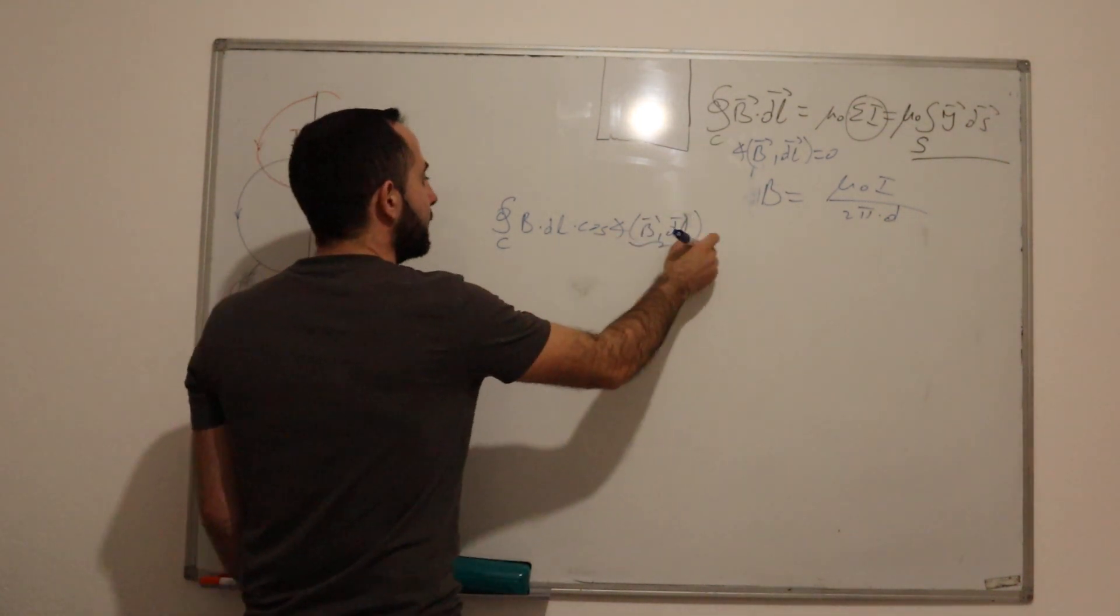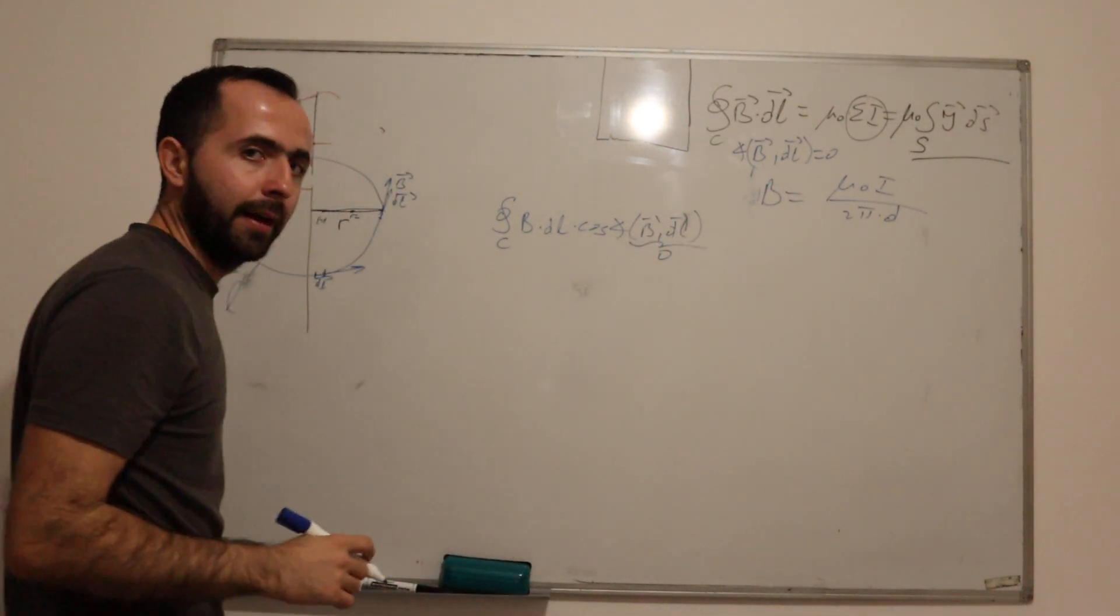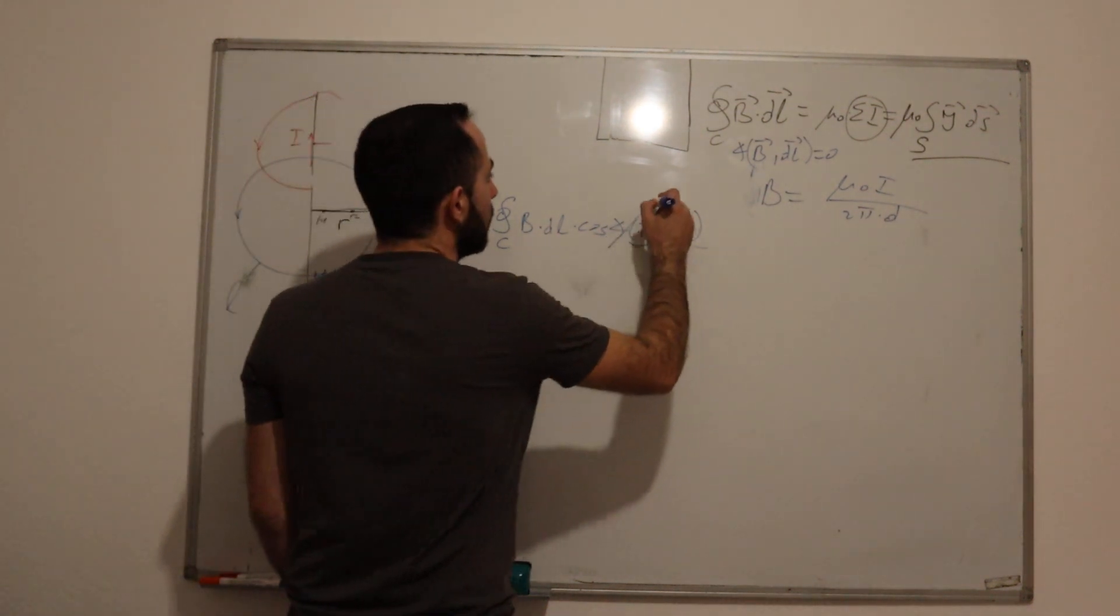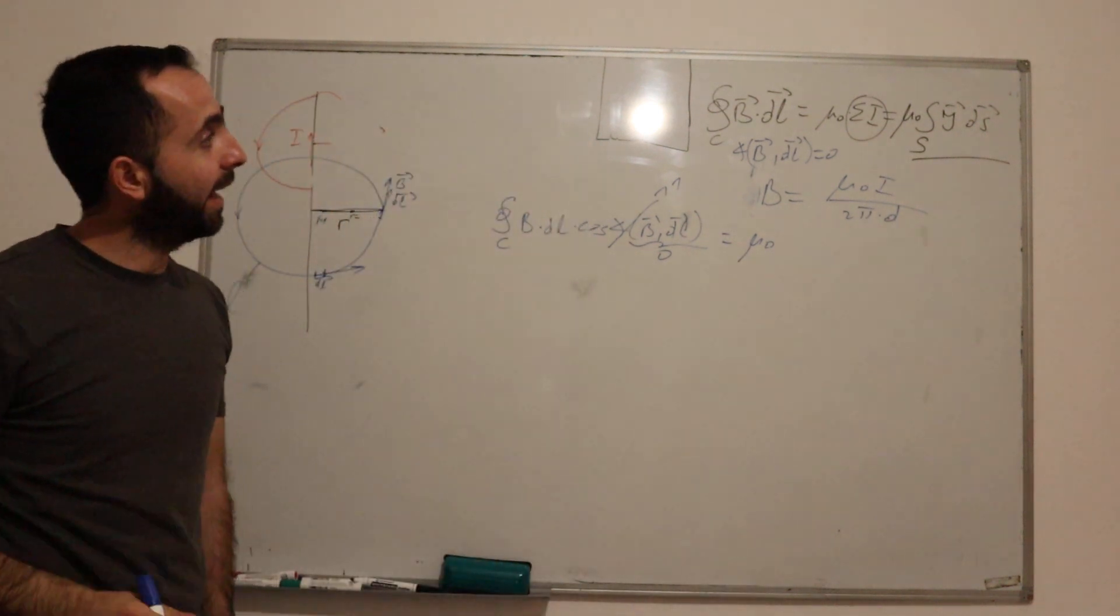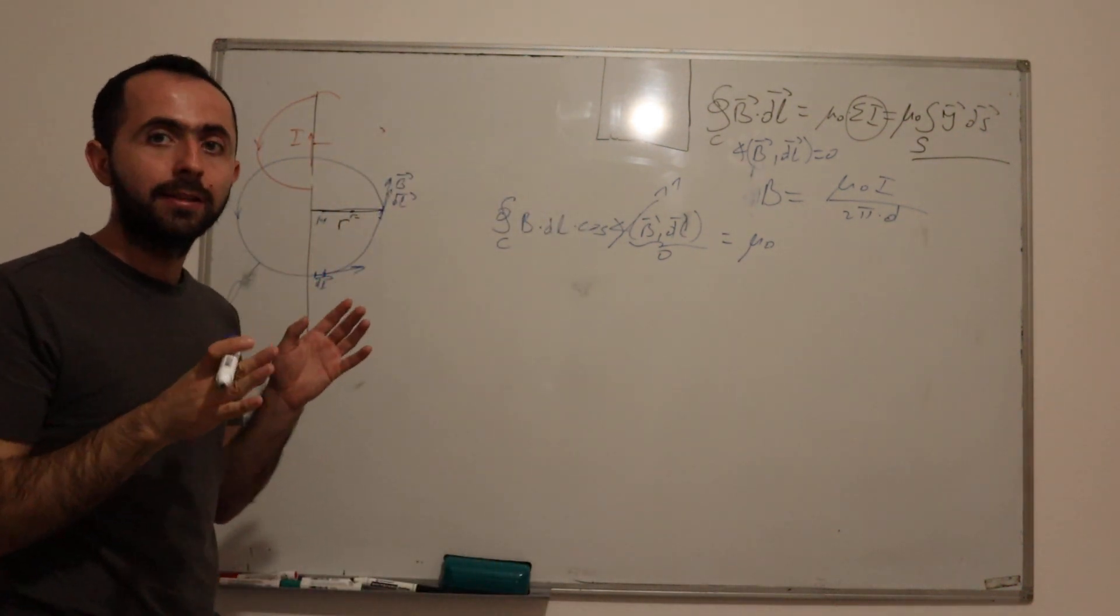So we got that this is zero and we know that cosine of zero is one. And this is equal to μ₀ times sum of all currents.